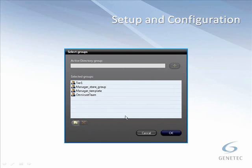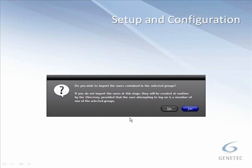Once you've added all the groups you need in the selected groups list, hit OK and it will start to process the groups. When importing groups, it will ask if you want to import the users with the selected groups. If you choose no, users will be dynamically added to the system when they log on — useful if you have many Active Directory users who won't all be logging into Omnicast applications. Note that trying to import a large number of users at once can slow down the system and take a while.